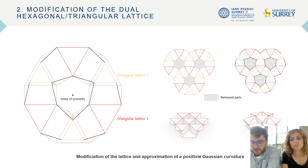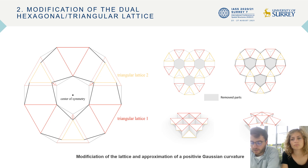The method consists in modifying symmetrically the hexagon center in order to have two different triangular layers on each side. As we can generate double curvature by manipulating triangular ratios, in our research we focus only on surfaces with positive Gaussian curvature, and especially on the development of a catenary arch.